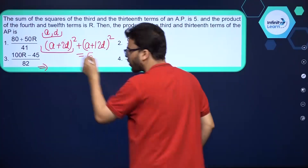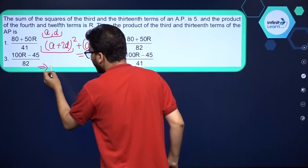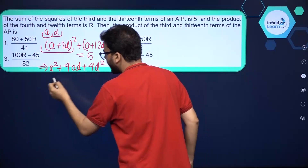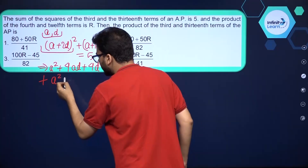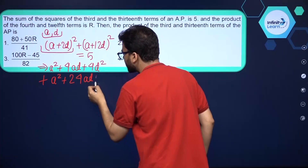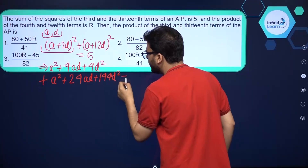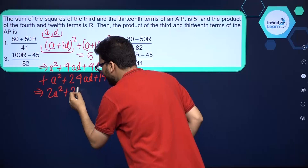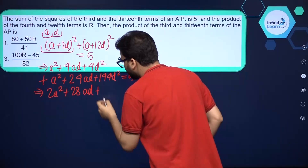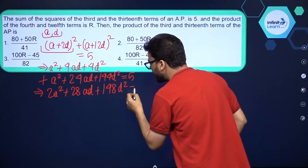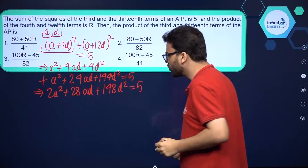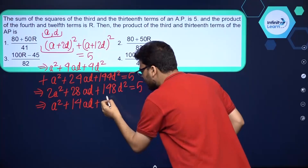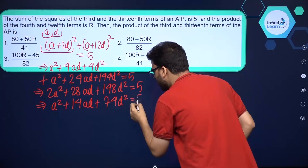Expanding directly: (A + 2D)² gives A² + 4AD + 4D², and (A + 12D)² gives A² + 24AD + 144D². Adding these and setting equal to 5 gives 2A² + 28AD + 148D² = 5. Dividing both sides by 2, we get A² + 14AD + 74D² = 5/2. This is Equation 1.